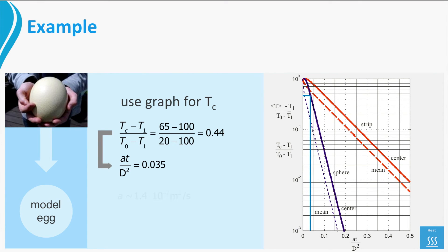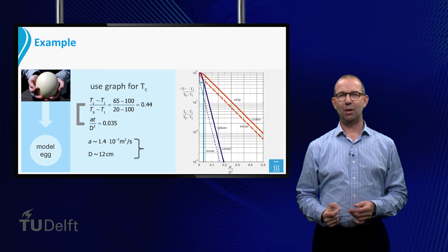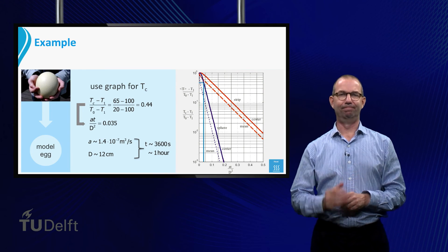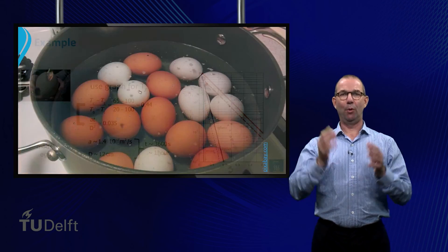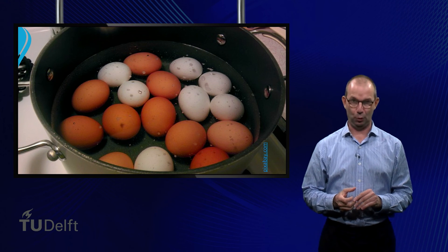The heat diffusivity is the same, all eggs are made of more or less the same material. Only the size is different. An ostrich egg is about 12 cm. Thus, now we find the cooking time 1 hour. Perhaps boiling a few chicken eggs at the same time is a quicker way to get sufficient food.